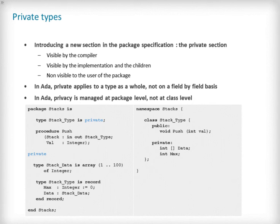A private section in Ada differs from C++ in that the private applies to the type as a whole and cannot be specified on an individual attribute-by-attribute basis. Secondly, privacy is managed at the entire package level and not class level. We show an example here of the comparison between the use of the private section in an Ada package specification and the use of the private keyword in a C++ class definition.